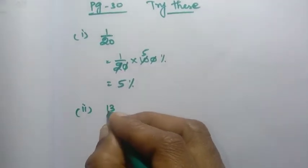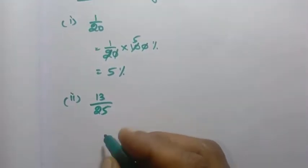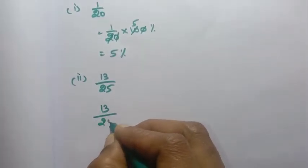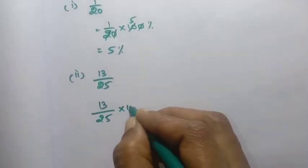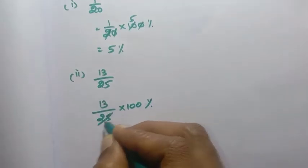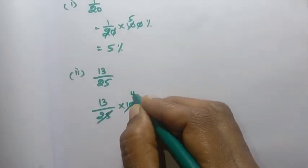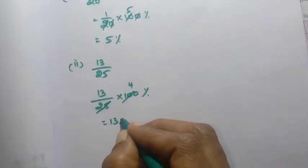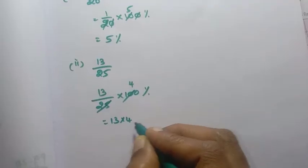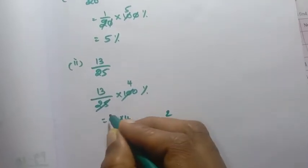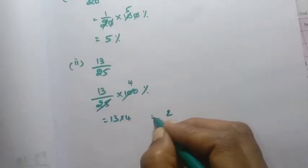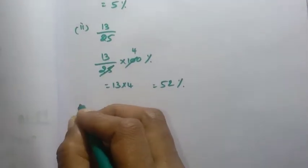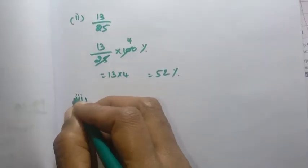Second sum: 13 by 25. Convert to percentage. 25 times 4 equals 100. So 13 into 4: 3 fours are 12, 1 four is 4, total 52 — so 52 percentage.